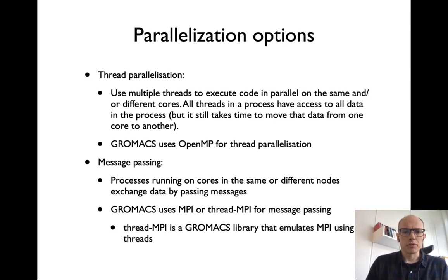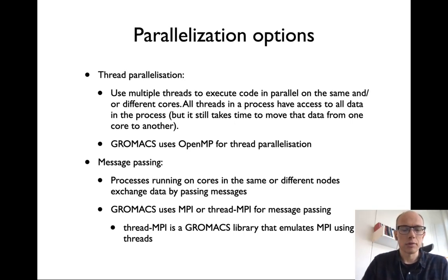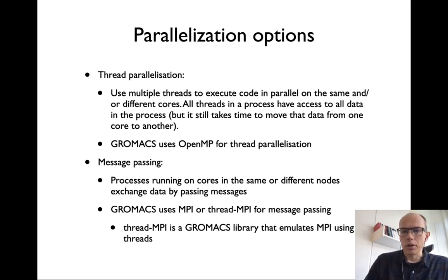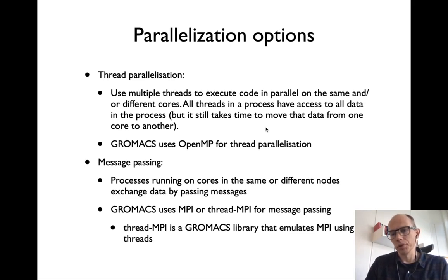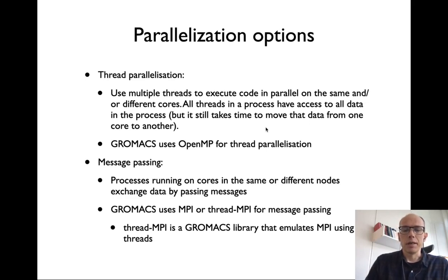At the finest level there is thread parallelization, both inside the CPU and on the GPU. Two threads can share a single core — called hyperthreading on Intel and SMT on AMD — which improves throughput. All threads in a process have access to all data in that process, allowing rather fast data access, though it still takes time to move data from one core to another. GROMACS uses OpenMP as the interface for thread parallelization to run software threads on the hardware threads.